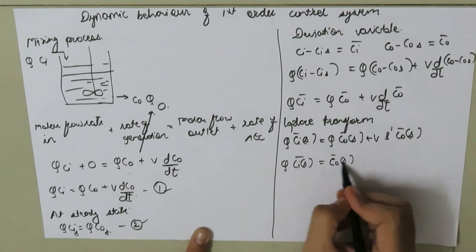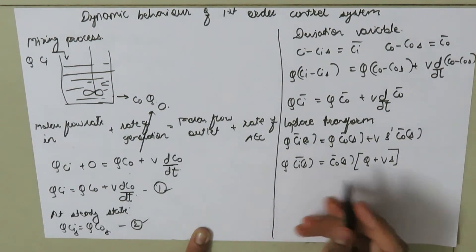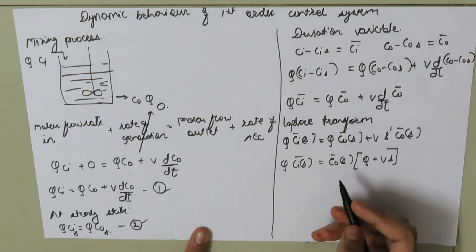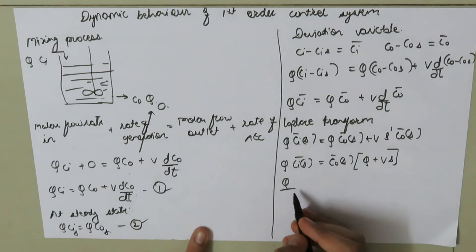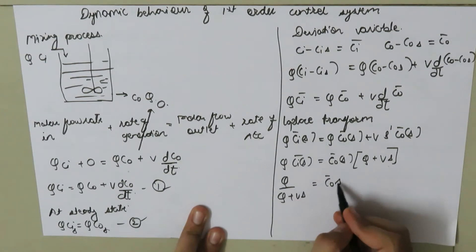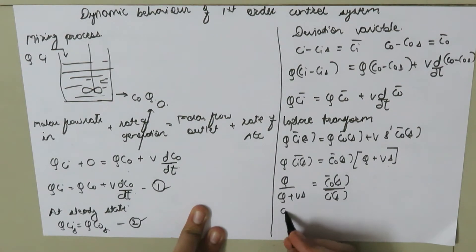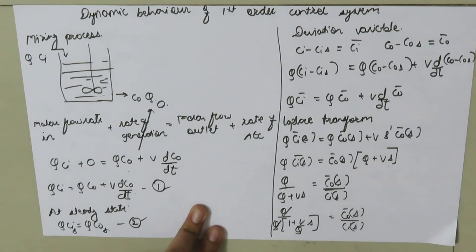So Q times CI bar(s) equals CO bar(s) times (Q plus V·s). The transfer function is the Laplace transform of the output deviation variable divided by the Laplace transform of the input deviation variable, which gives CO bar(s) divided by CI bar(s) equals Q divided by (Q plus V·s). Taking Q common from the denominator gives 1 divided by (1 plus (V/Q)·s).